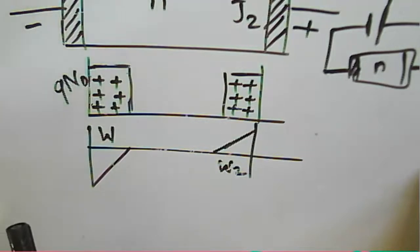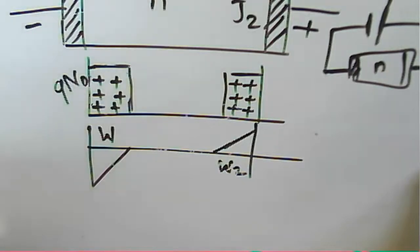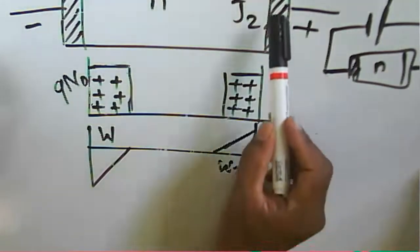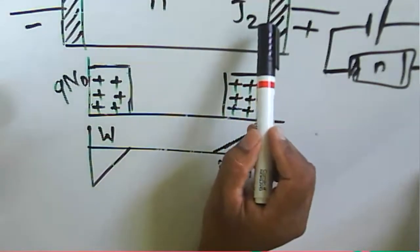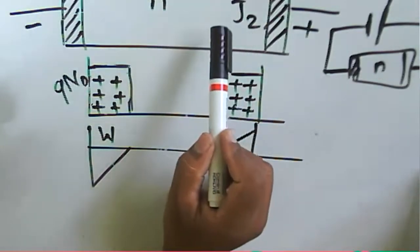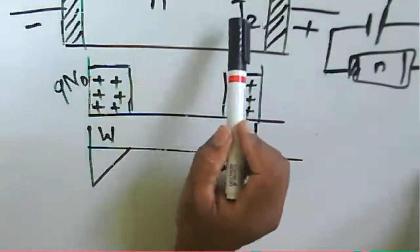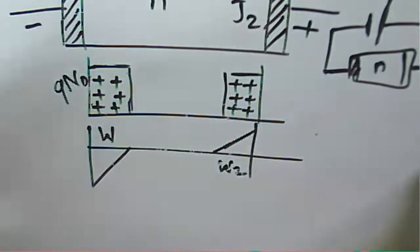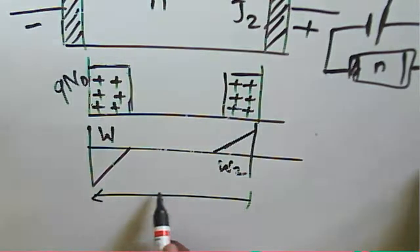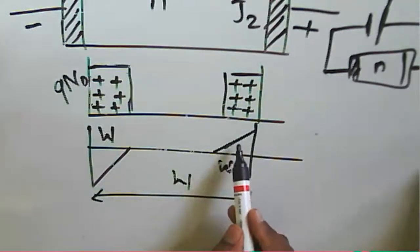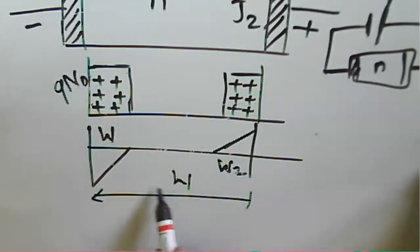When the depletion regions of J1 and J2 merge, the voltage at which this occurs is called the punch-through voltage. If we further increase the bias, the depletion width Wt continues to increase until it equals the total semiconductor width W.